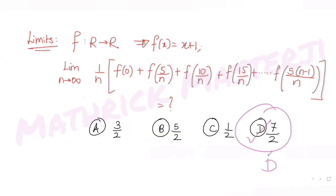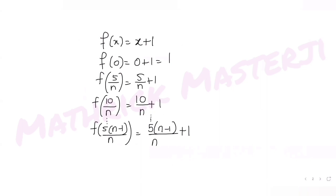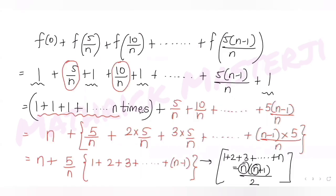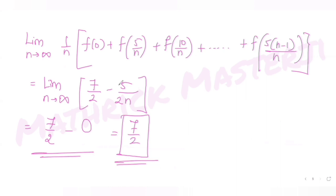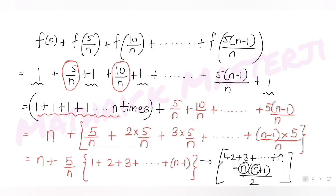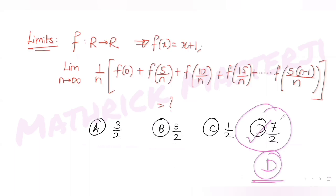The answer 7 over 2 matches option D, so D is the correct answer. To summarize: we added all expressions inside the bracket, identified that 1 was added n times, factored out 5 over n from the remaining terms to get the sum of n minus 1 natural numbers as n minus 1 times n over 2, divided by n to get 7 over 2 minus 5 over 2n, and applied the limit to get 7 over 2.